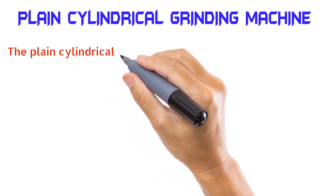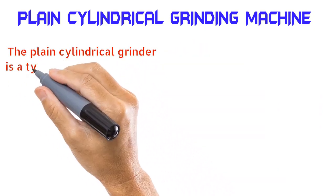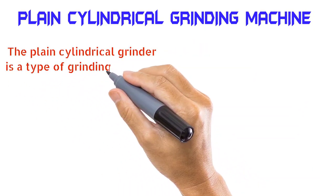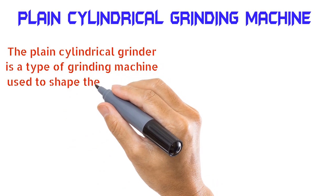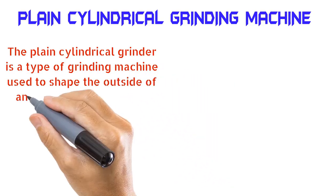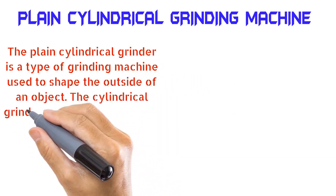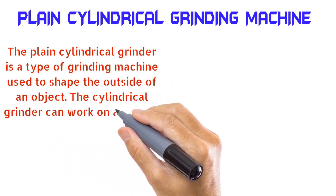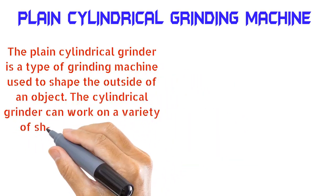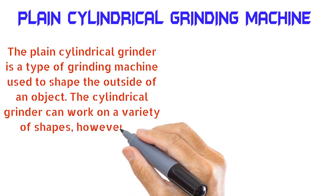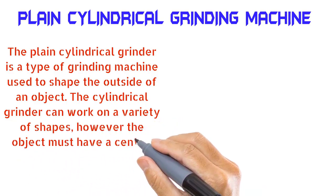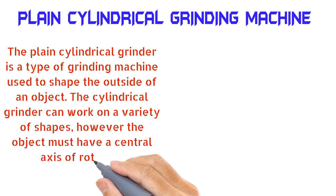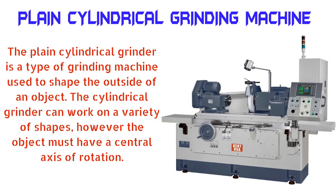The plain cylindrical grinder is a type of grinding machine used to shape the outside of an object. The cylindrical grinder can work on a variety of shapes; however, the object must have a central axis of rotation.